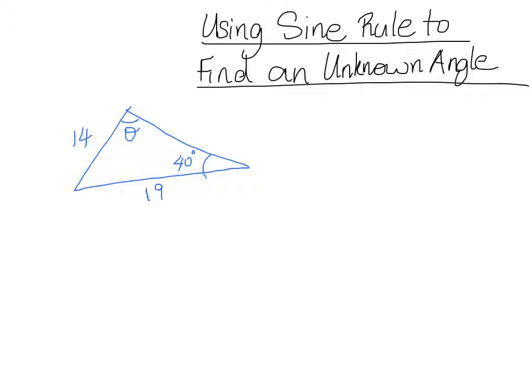Well, the sine rule can also be used to find a missing angle. The same things that we spoke about earlier applies. So, in this case, what do we have? Well, let's label our triangle first to see.